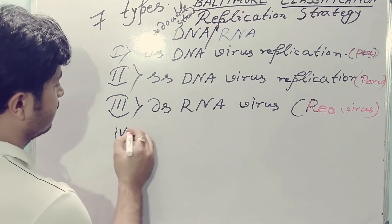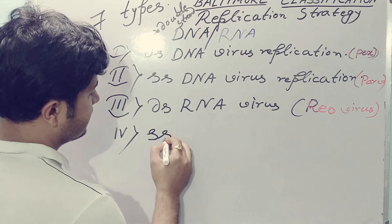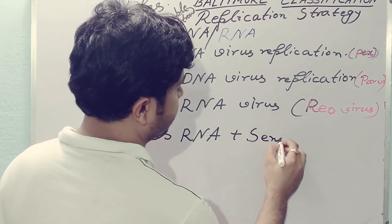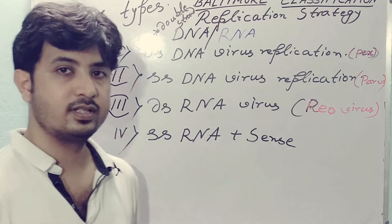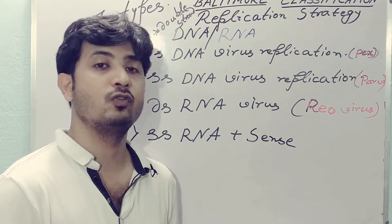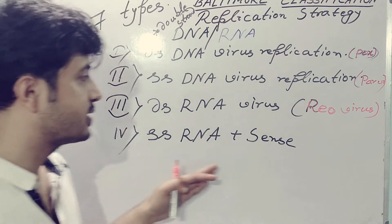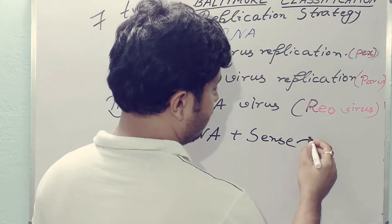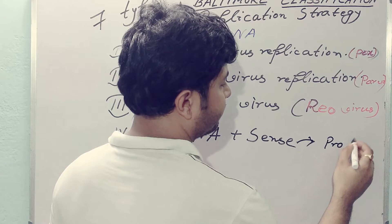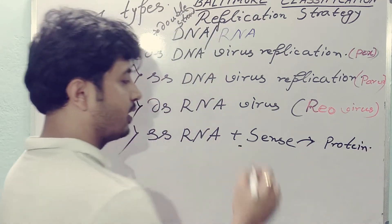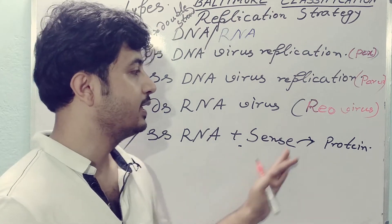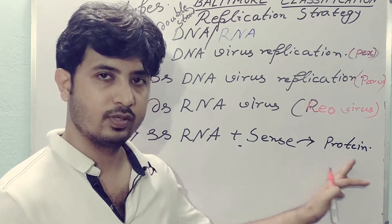Moving to Class 4, that is single-stranded RNA viruses, but here they are positive sense. The positive sense RNA tells you whether the RNA genome can be read directly as the mRNA or if it has to go another way. The positive sense virus can directly read their RNA genome to form protein — this positive sense RNA genome can directly act as an mRNA, which can be directly translated into protein.